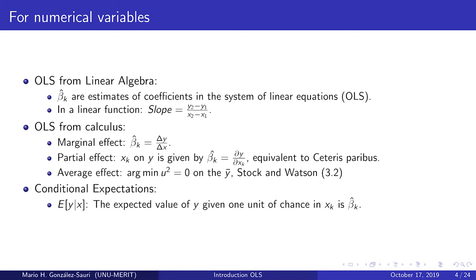From the solution of OLS from calculus, we can directly interpret the beta coefficients as marginal changes — that is, the marginal effect on y for one unit of increase in x_k. Similarly, the estimates of beta_k are partial effects of y for one unit of increase in x_k. Finally, from conditional expectations, we can formulate the statement: the expected value of y given one unit of change in x_k is beta_k.